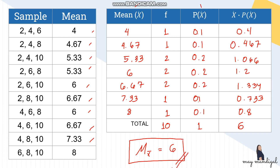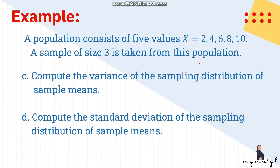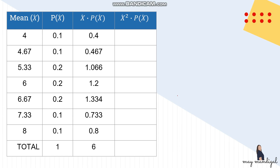The mean of the sampling distribution equals the population mean — both are 6, confirming the relationship. Now to solve for variance and standard deviation, we need to compute the summation of the square of x-bar times its probability. You can do this by multiplying each x-bar by its corresponding x-bar × P(x-bar) product directly.